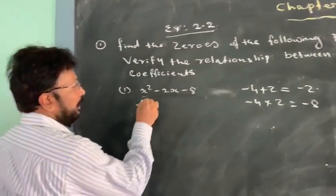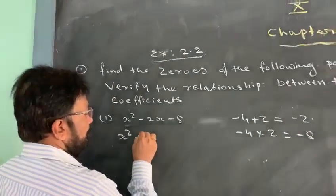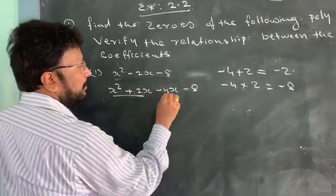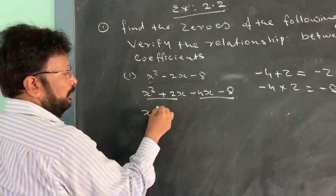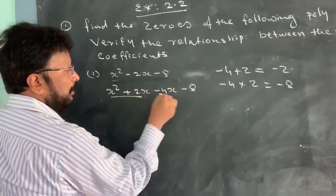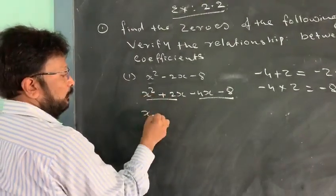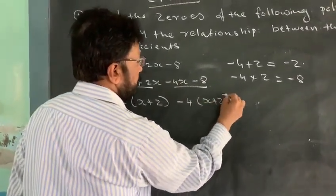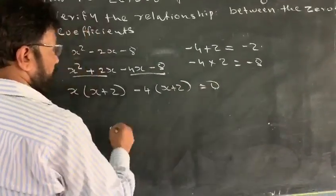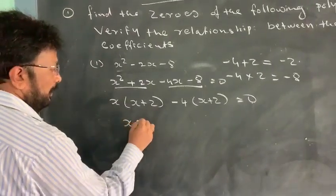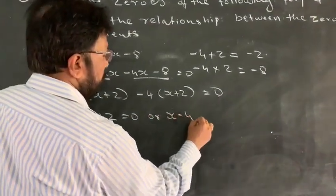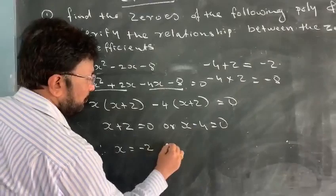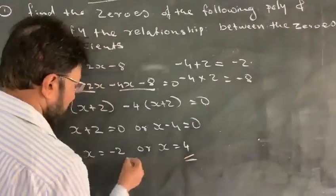So now we will do it: x squared plus 2x minus 4x minus 8. Taking x common from the first two terms and minus 4 common from the last two terms, we get x(x plus 2) minus 4(x plus 2) equals 0. So x plus 2 equals 0 or x minus 4 equals 0. Therefore, x equals minus 2 or x equals plus 4. So these are the values.